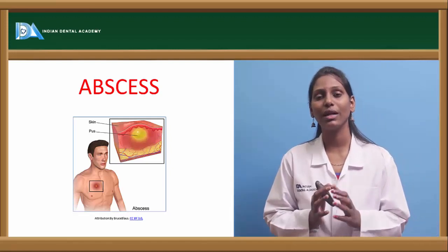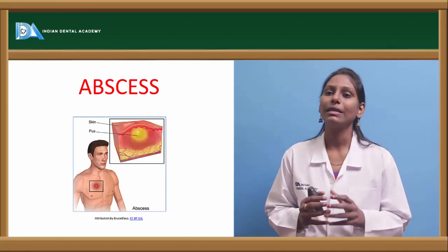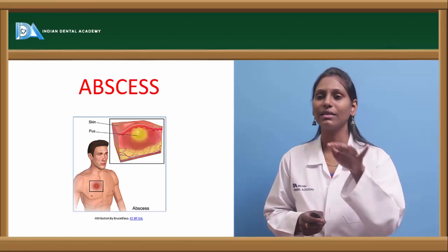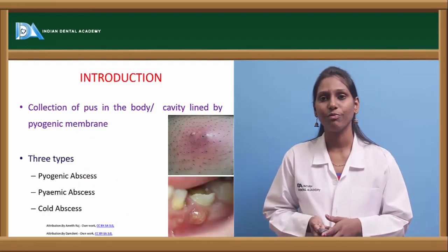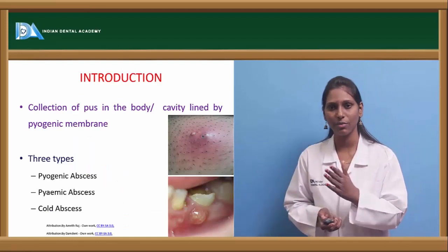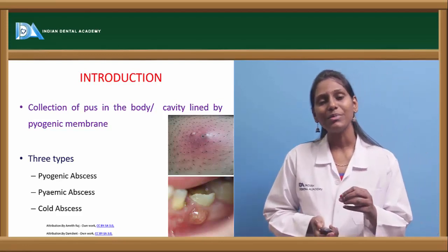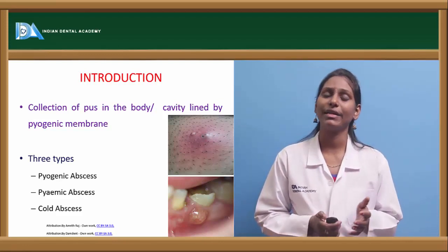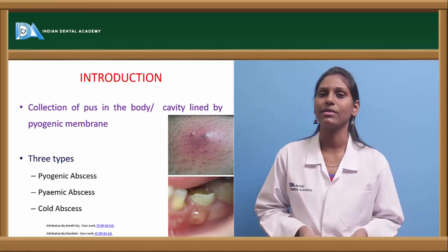An abscess is a localized collection of pus within a cavity or body. Underneath the epidermal layer we can see collection of pus lined by a pyogenic membrane. We have different types: pyogenic abscess, pyemic abscess, and cold abscess.